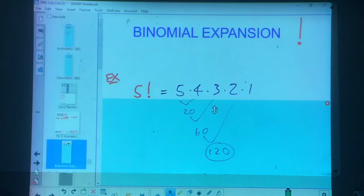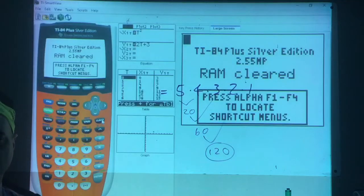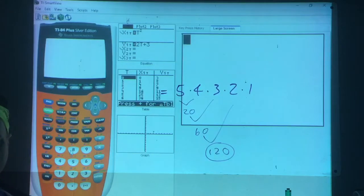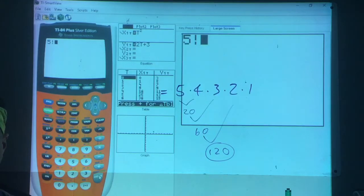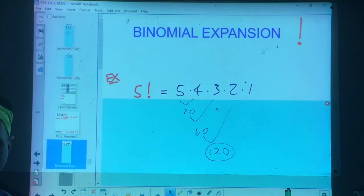Now, certainly we don't want to be doing this by hand if we get some mighty big ones. So let's take a look at the calculator. Where can we find the exclamation point? It's going to be under math, probability. And there it is.